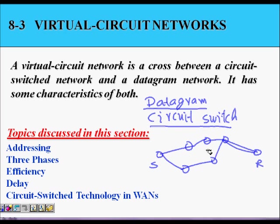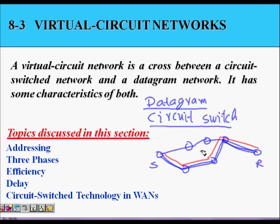In a circuit switched network, it's like a telephone network. You first make a call setup and then reserve resources — meaning you reserve a particular path and have guaranteed bandwidth for your call. Both have their benefits and disadvantages. In a datagram network there is more resource utilization and more users can be accommodated, whereas in a circuit switched network resources allocated to users are underutilized if those users are not active.